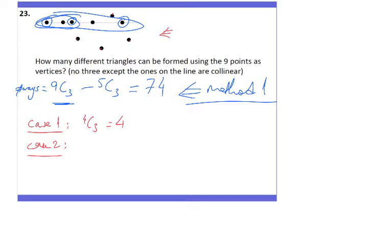In Case 2, I choose only one dot from the straight line. I then need two more dots from the four that are not on the straight line. So the number of triangles in this case is 5C1 times 4C2, which equals 30.